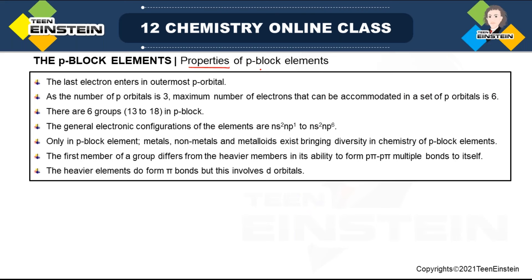Now we will see some common properties of p-block elements. Since these are p-block elements, the last electron enters the outermost p orbital. There are three p orbitals, each with a maximum capacity of two electrons, so three orbitals can accommodate a maximum of six electrons in total.